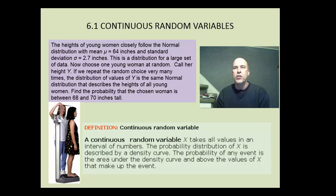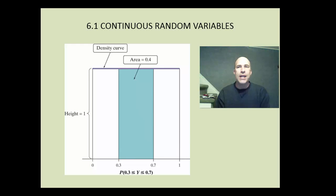A continuous random variable X takes on all values in an interval of numbers. So, for example, somebody could have a height of 64 inches. Somebody could have a height of 63.9 or 65.012. We can take on all values in an interval of numbers. Therefore, there's an infinite number of outcomes. And the probability distribution of X is described by a density curve. So we have to go back to our old friend density curves, which we saw in Chapter 2. A density curve is any curve that is above the x-axis and has an area of 1 beneath it.